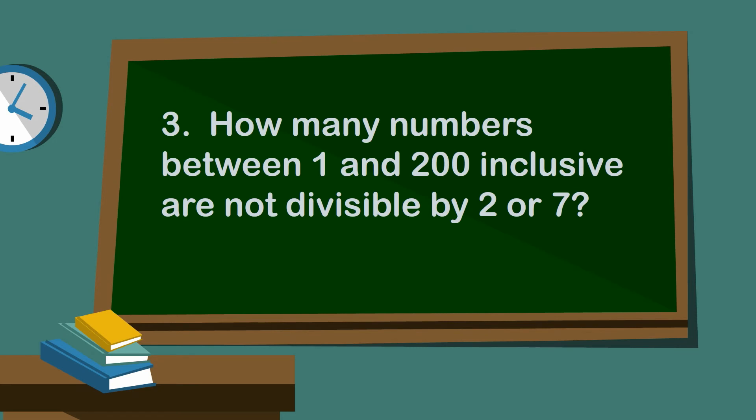So now let's go on to the last question I wanted to do. How many numbers between 1 and 200 inclusive are not divisible by 2 or 7?